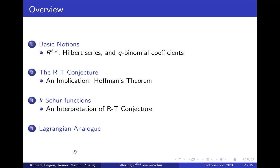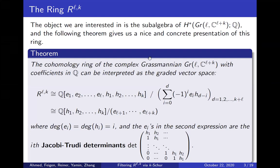We're interested in studying the Hilbert series of subalgebras of the cohomology ring of the complex Grassmannian with rational coefficients. The ring R_{l,k} is the cohomology ring of the complex Grassmannian of l-planes in C^{l+k} dimensional space. We can present this as a polynomial ring with variables e_1 through e_l and h_1 through h_k, quotienting out by a certain ideal.